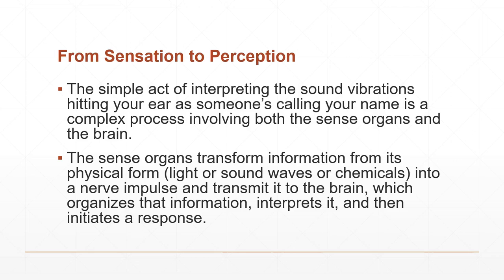In other words, sense organs transform information from its physical form into a nerve impulse, sending action potentials to the brain. The brain then organizes the information, interprets it, and initiates a response if necessary. Everything we experience is a collection of what's happening around us and how our brain decides to react. As human beings, we have the capability to organize experiences from different sense organs into one coherent, meaningful experience. For example, information from the outside world such as light, sound, and other data enters our body through receptors like the eyes, mouth, nose, ears, and skin.